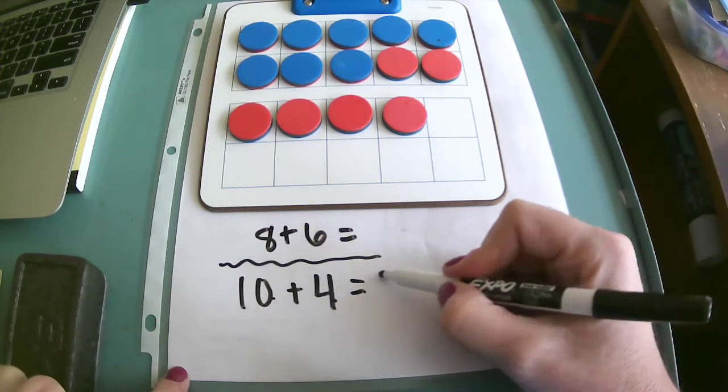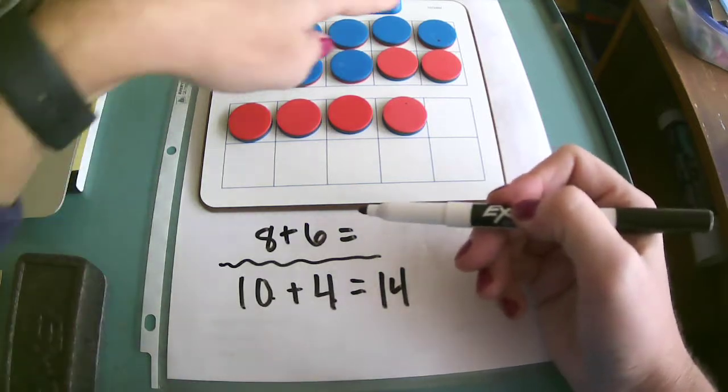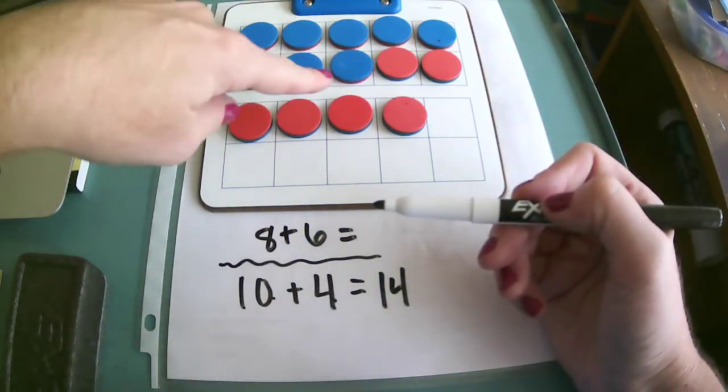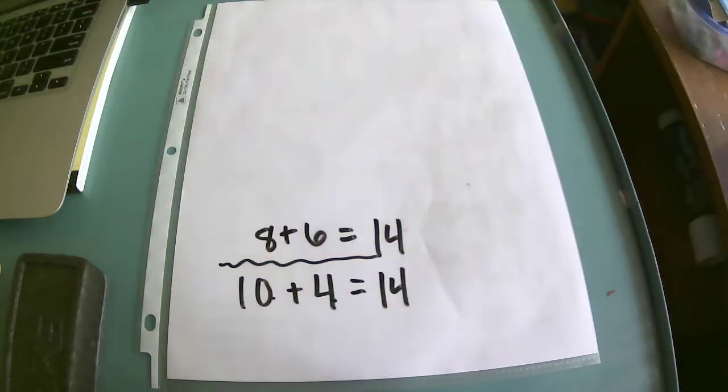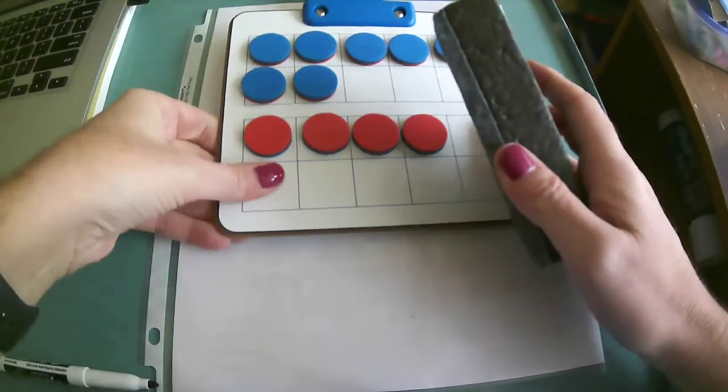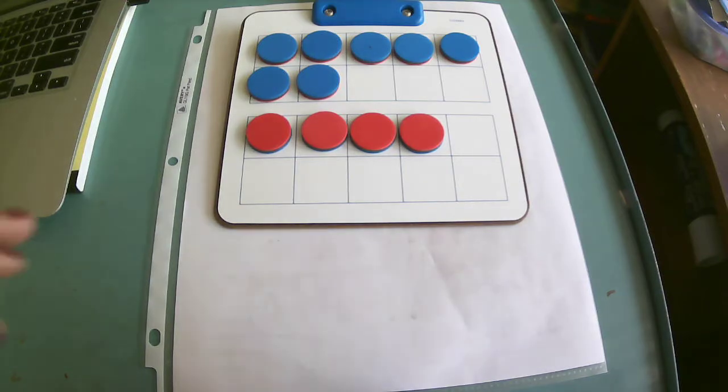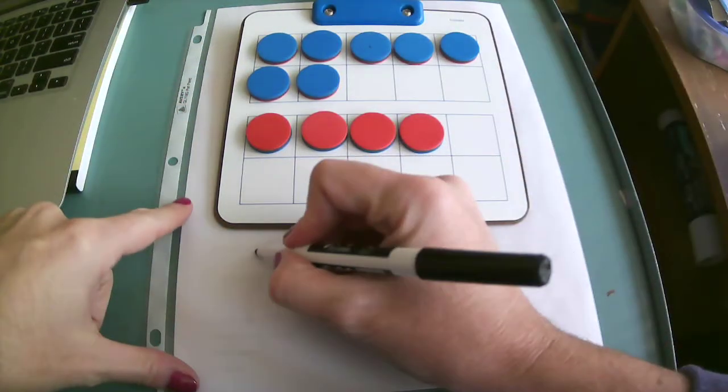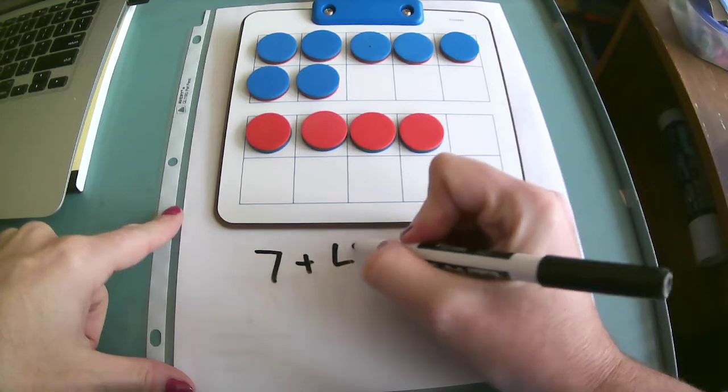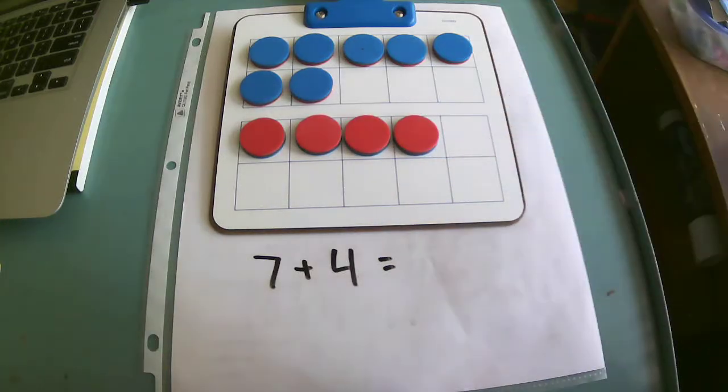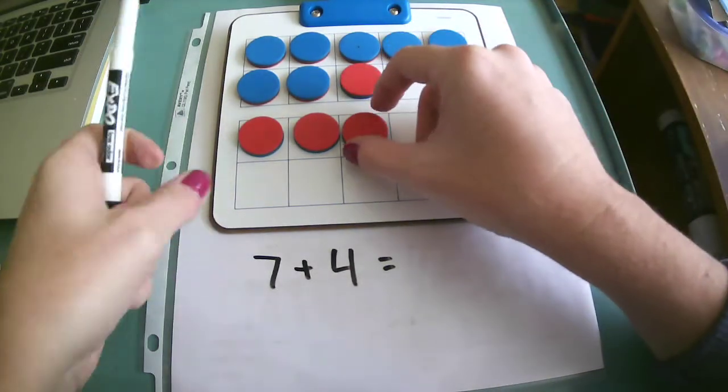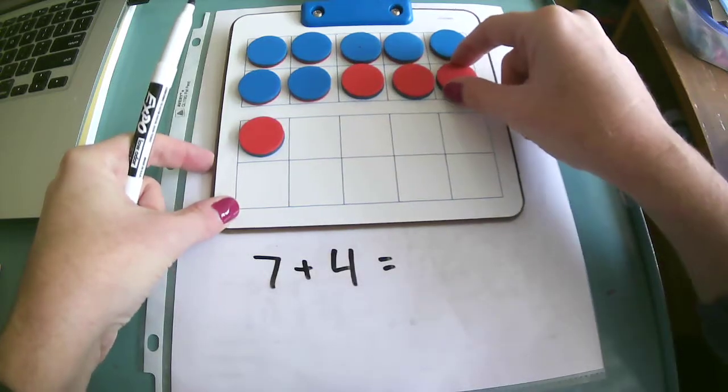So I know that 10 plus 4 easily is 14, which means since I didn't take away any of my counters here, I should have 14 when I add six and eight together. Okay, so let's try another problem. This time we are going to be adding seven, because there's seven in my first 10 frame, and four. Okay, so again I want to make that friendly number of 10, so I'm going to move, not remove, but just move some counters over to fill up my first 10 frame.